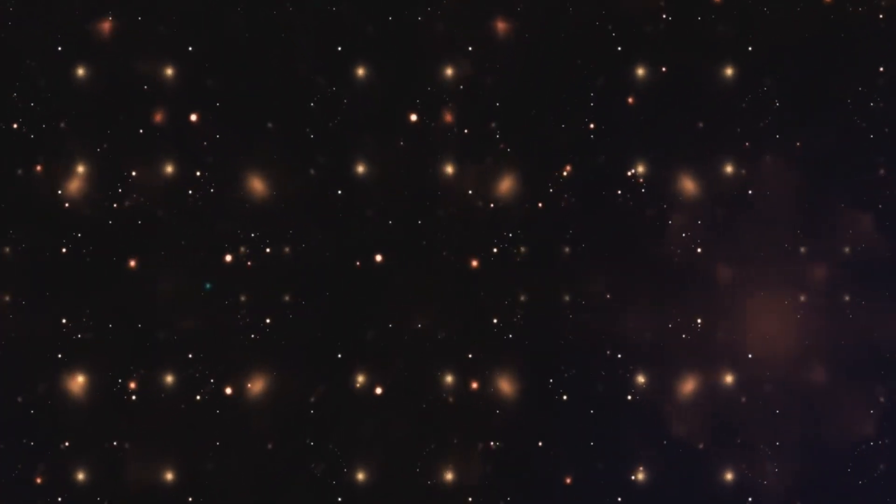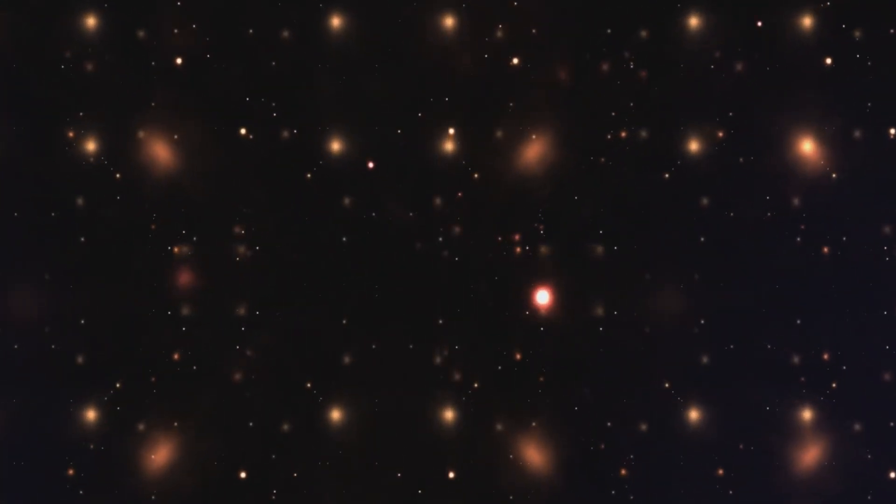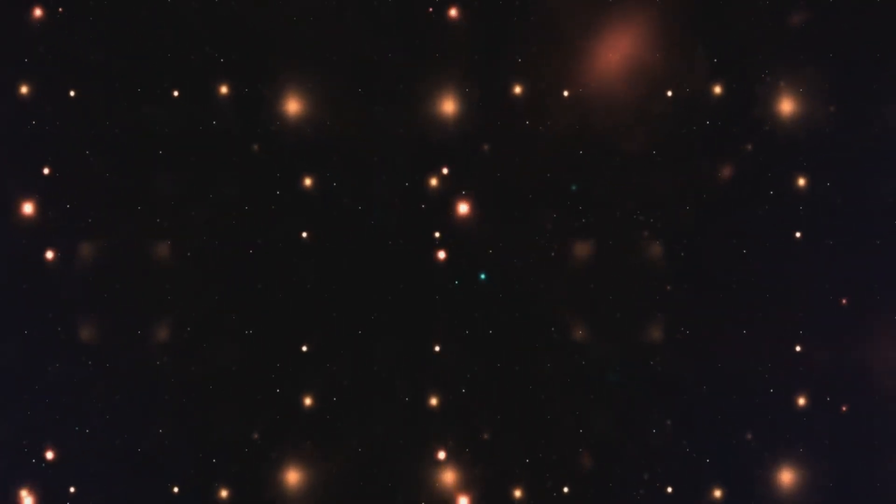The iron in our blood, the calcium in our bones, and every element heavier than hydrogen owe their existence to nuclear processes within stars. Through the intense heat and pressure of stellar cores, atoms fuse to form heavier elements, which were later released during violent stellar explosions known as supernovae.